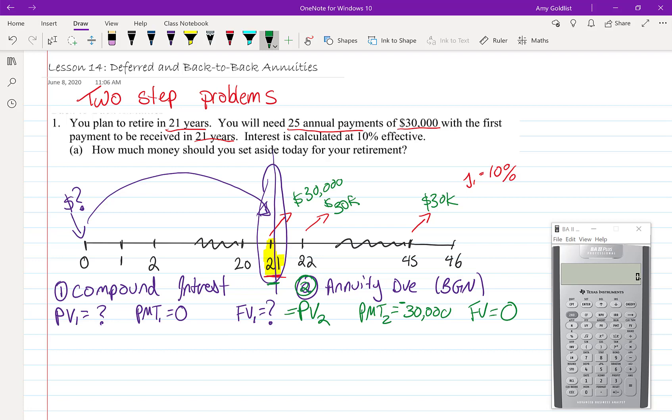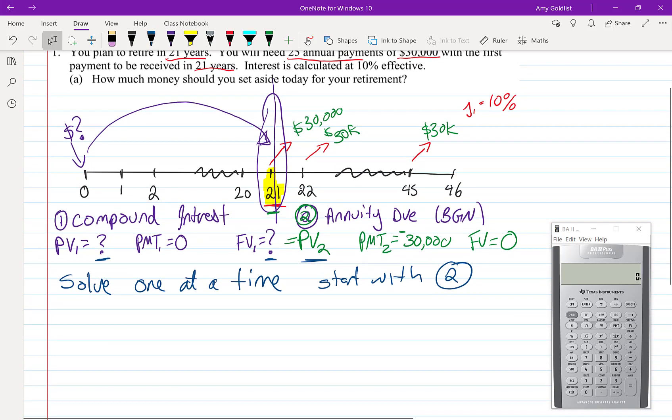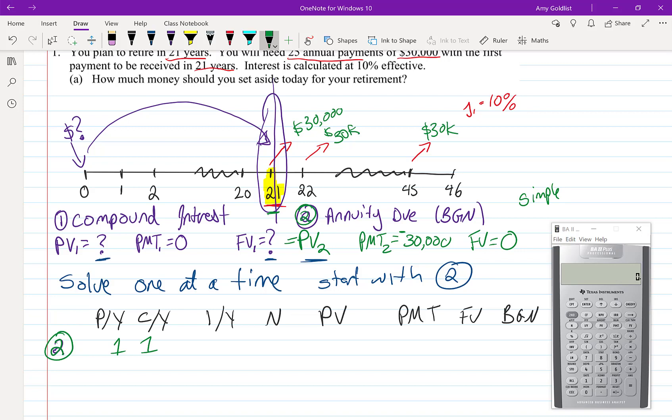So we have to solve these one at a time. And here we have two unknowns here. And here we only have one unknown. So we're going to start with two because we only have the one unknown. So let's start by drawing in our calculator buttons. Okay, all nicely drawn very fast. We're going to start with number two. So I'm going to put a two in here. In this whole problem, our PY and CY are both one. That makes this a simple annuity. Because everything in sight is annual. And our interest rate is 10. This annuity goes on for 25 years or 25 payments. I want to figure out what the present value is. My payment will be $30,000. And my future value is zero. It's an annuity due. So I need to make sure that begin is turned on. I usually like to do that first.